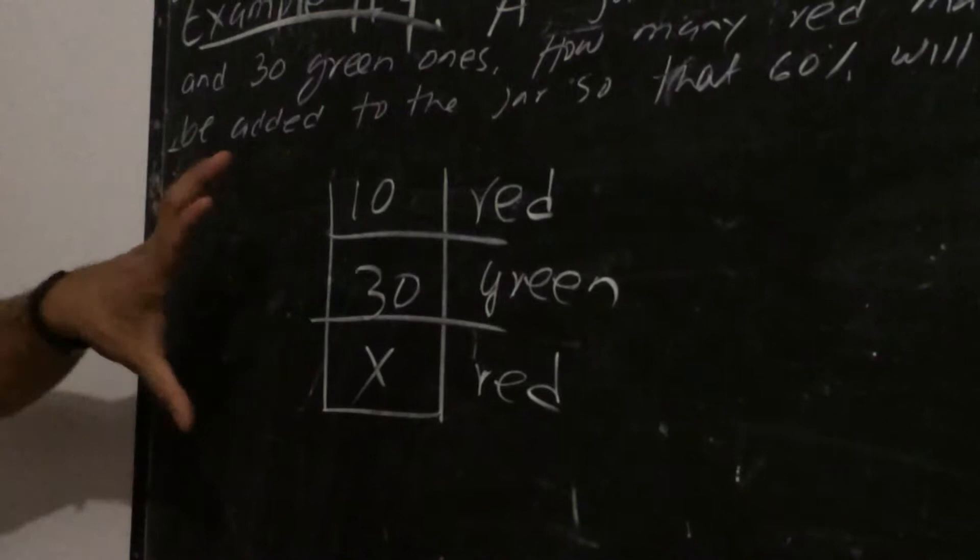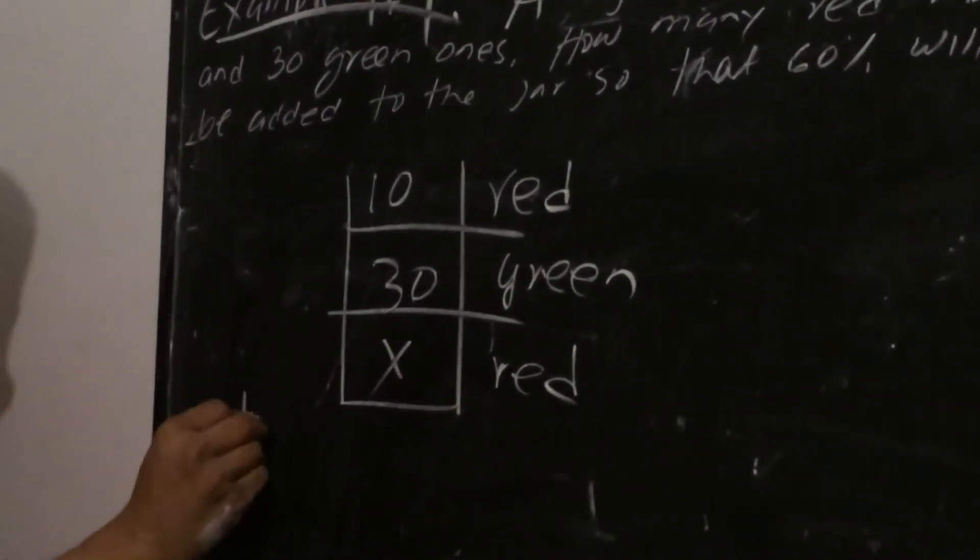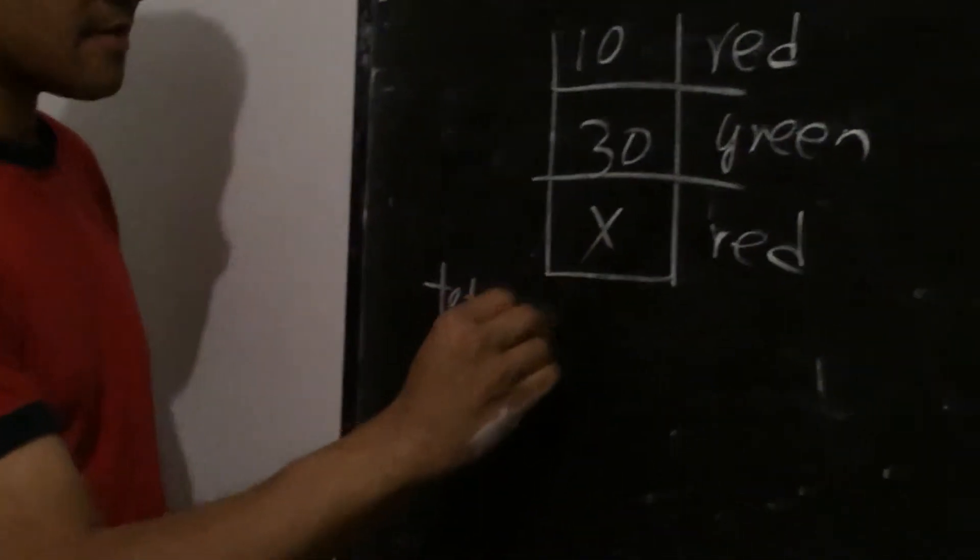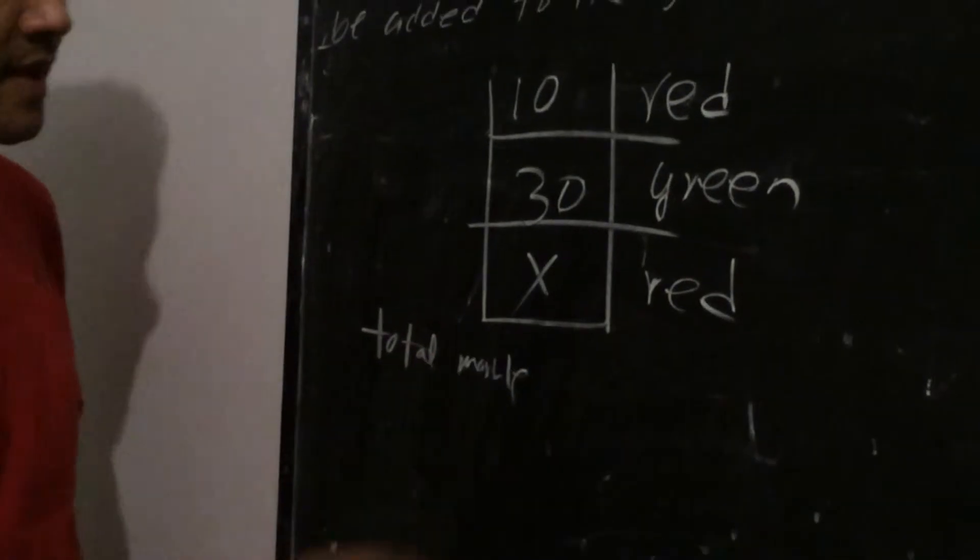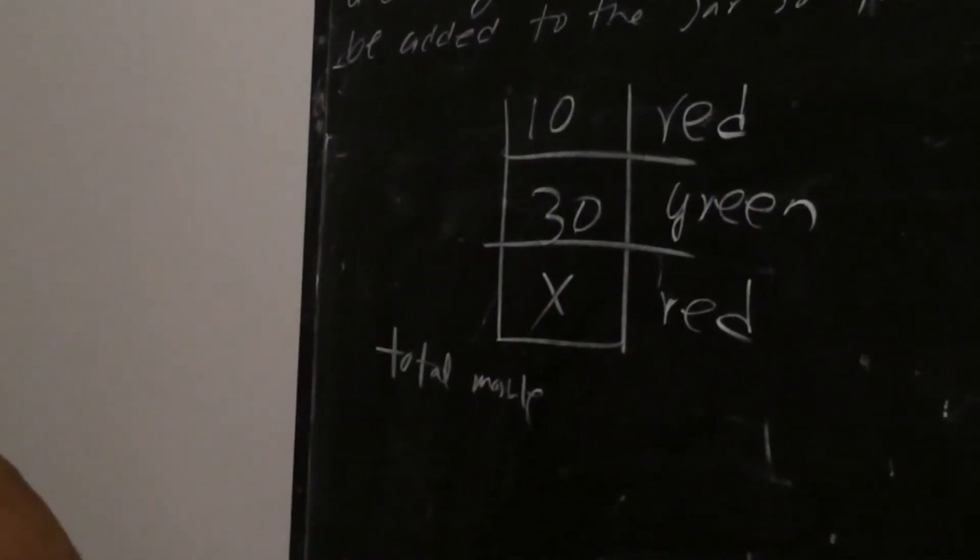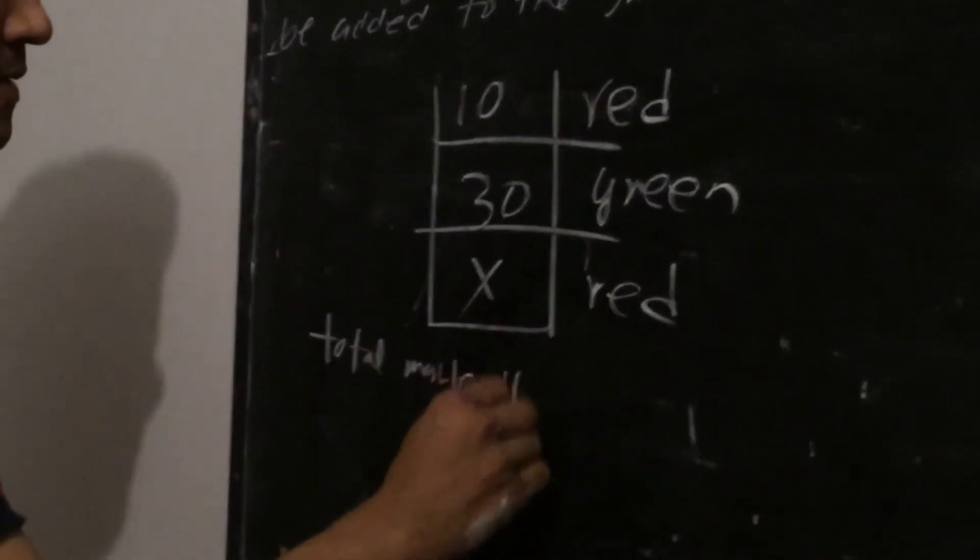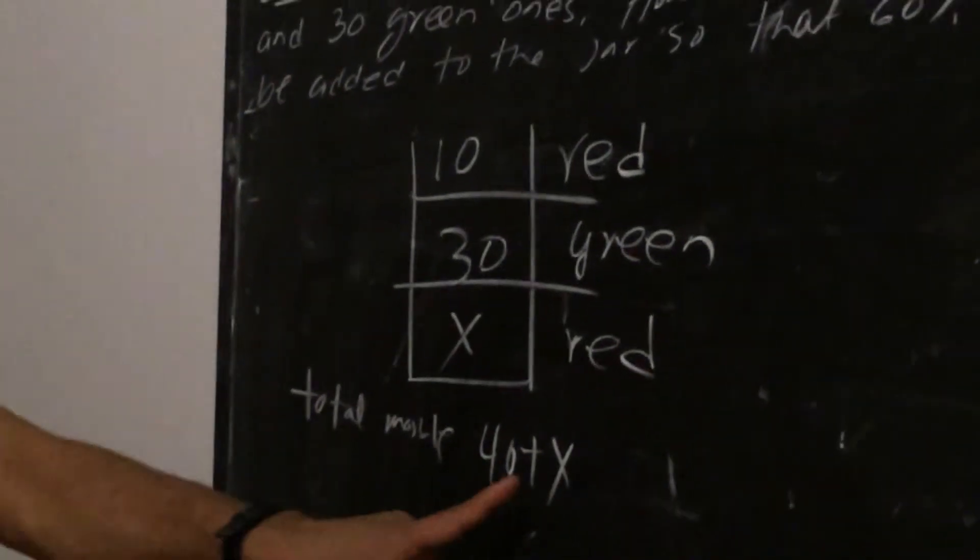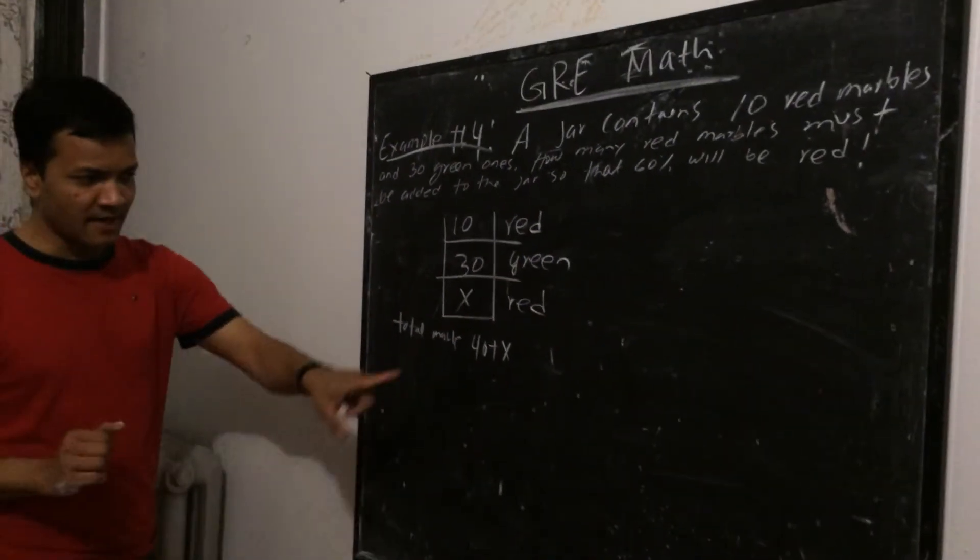So the total marbles, total marbles is 10 plus 30, 40, 40 plus x, 40 plus x. That many marbles are in the jar.